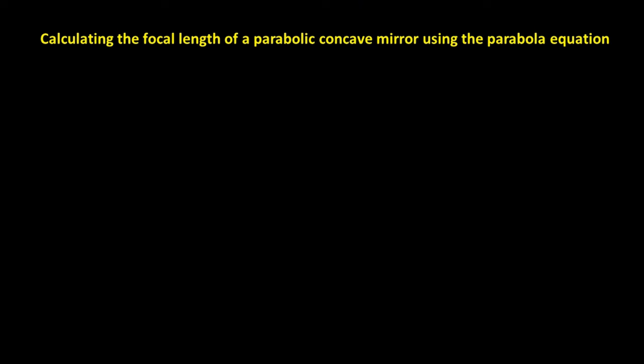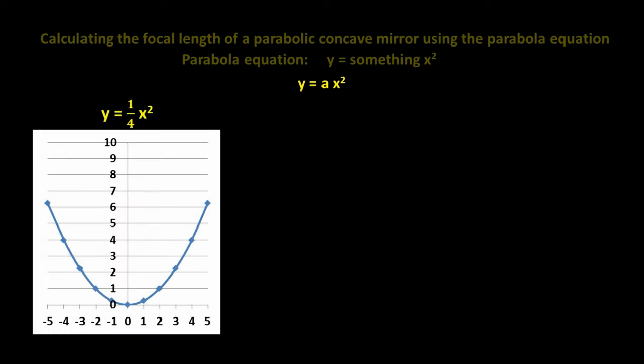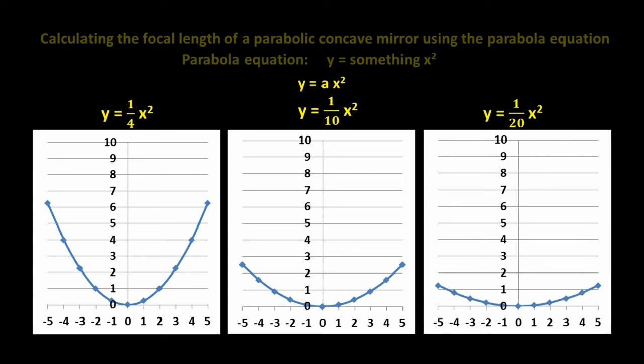We can actually calculate the focal length of a parabolic concave mirror using the parabola equation. We've already seen that parabolas follow the equation y equals something x squared. Mathematicians and scientists use the expression y equals ax squared, where the a can be any number. For example, this is the graph for a parabola that follows the equation y equals one-quarter x squared. This is the graph for the parabola that follows the equation y equals one-tenth x squared. And this is the graph for the parabola that follows the equation y equals one-twentieth x squared.